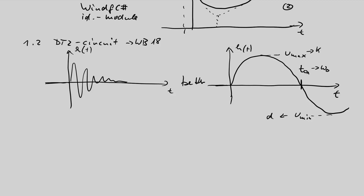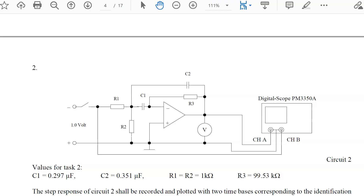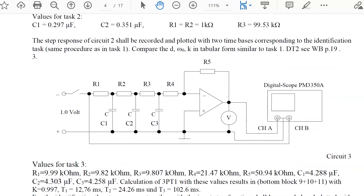In the lab we can of course help you operate the identification program. Note that the measurement and identification are quickly done — the lengthy part is this explanation video. Working through the experiment can be very fast. Part 1.3 introduces a third circuit, also an op-amp circuit.